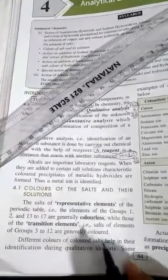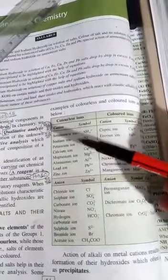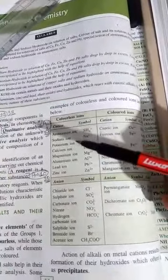Different colors of salts help us in their identification during qualitative analysis. When we see different color salts, by looking at the color we can identify which metallic ion is present. On page number 64 of your book there are two tables - one for cations that are colorless and another for colored ones. You need to learn these as homework.